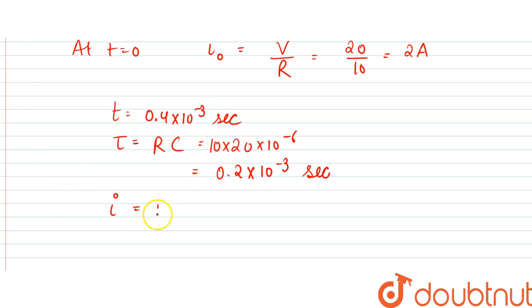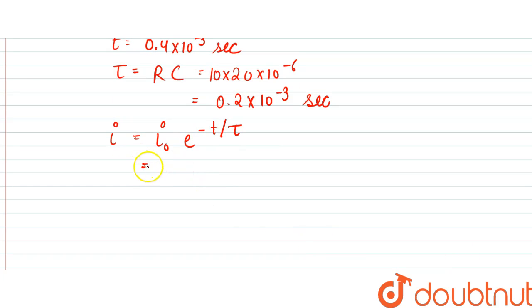So I would be equal to I0 e power minus t by tau. So that is equal to, since this is 2, e power minus. So time is 0.4 into 10 to the power minus 3 divided by tau is 0.2 into 10 to the power minus 3,